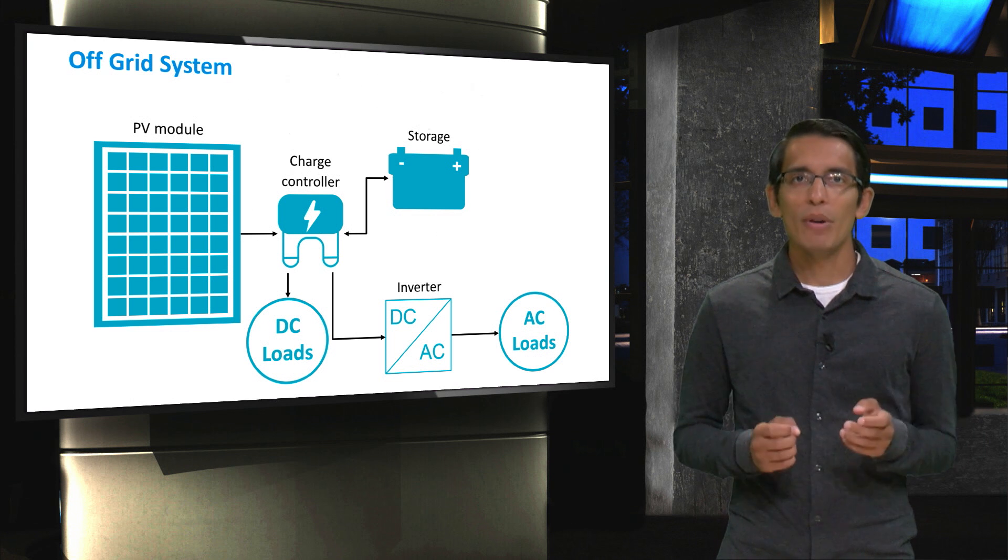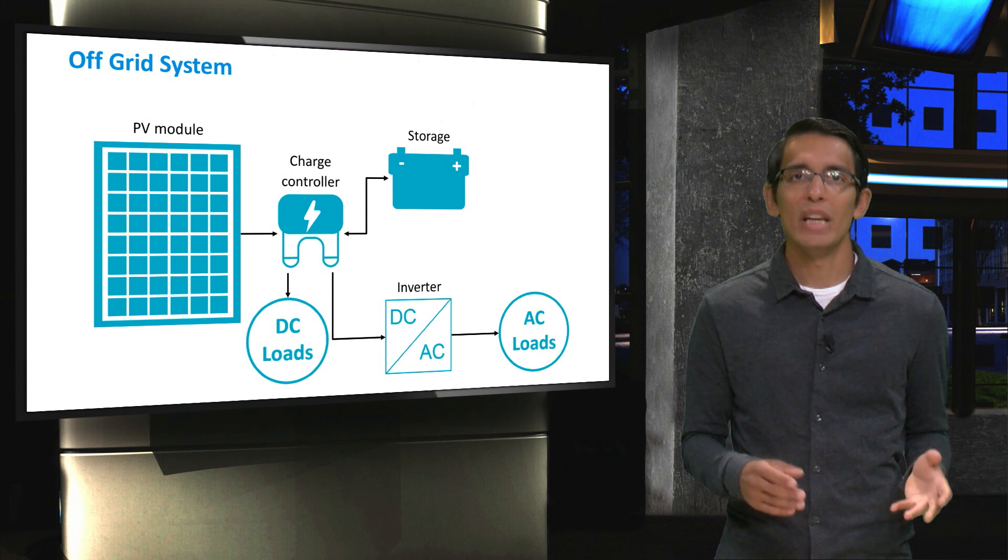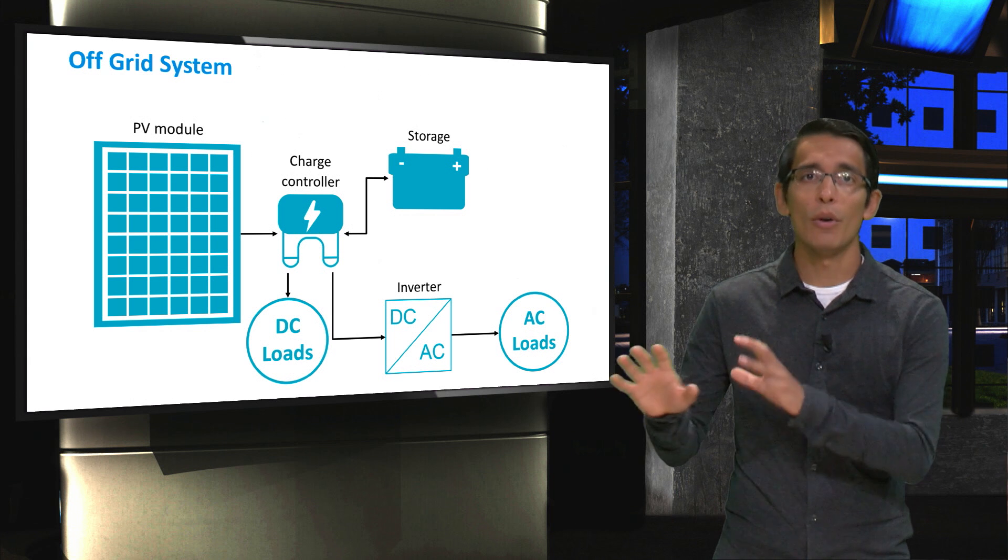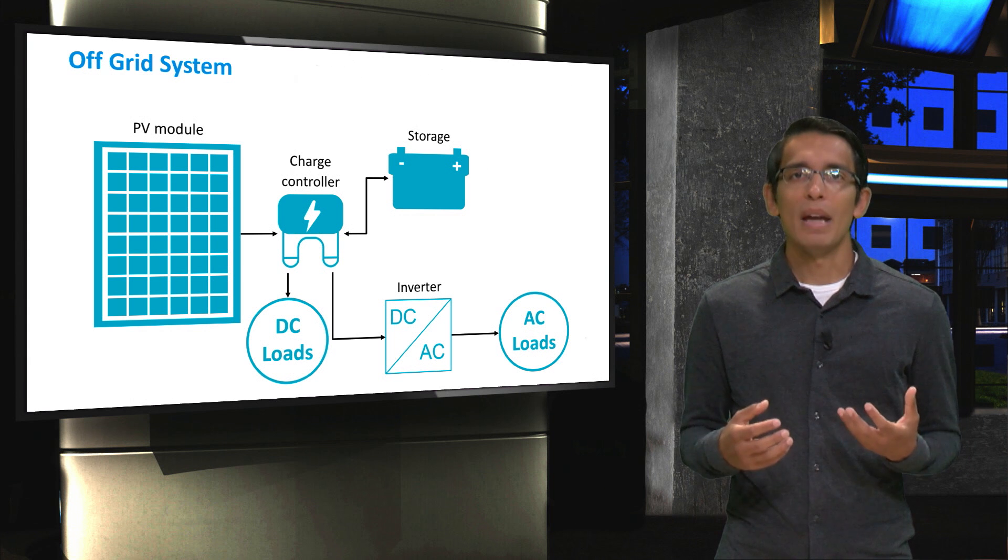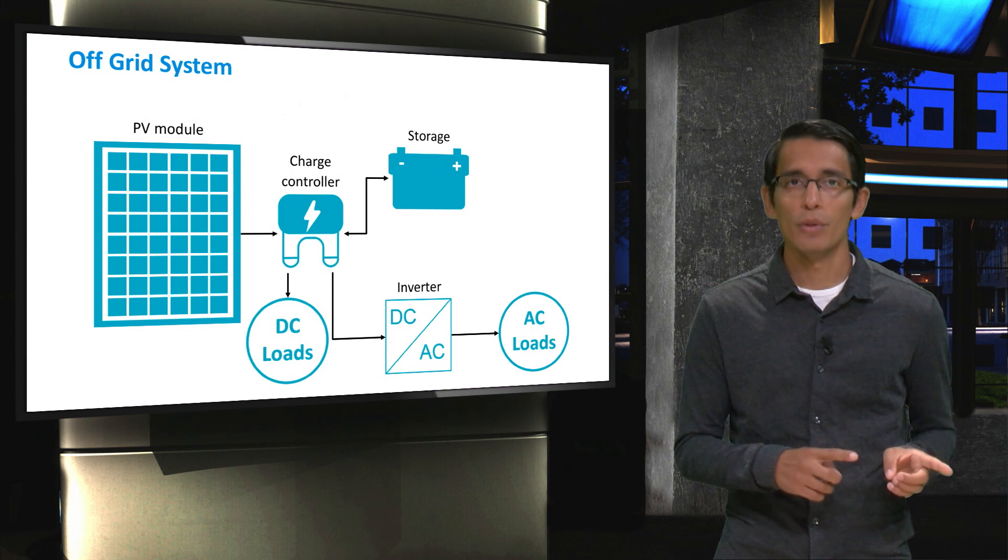You can see that a battery is connected on the DC side of the PV system. Basically, the current from the PV modules will either flow into the battery or go to the loads. If the load demands more current than the PV modules can produce, current will flow from the battery to the loads. So why does this system really need a battery? Why can't we just power the loads with solar energy directly?